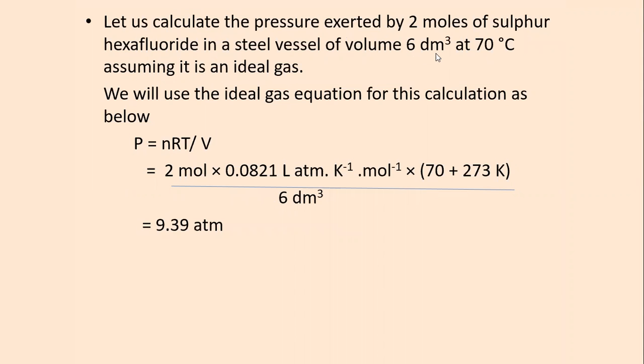Let us calculate the pressure exerted by 2 moles of sulfur hexafluoride in a steel vessel of volume 6 dm³ at 70°C, assuming it is an ideal gas. We will use the ideal gas equation for this calculation: P = nRT/V. That equals (2 mol × 0.0821 L atm K⁻¹ mol⁻¹ × (70 + 273) K) / 6 dm³.